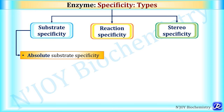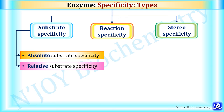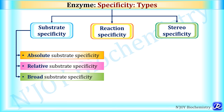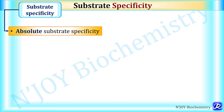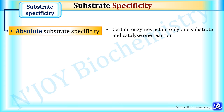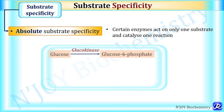Substrate specificity can be absolute, relative, or broad. In absolute substrate specificity, certain enzymes act on only one substrate and catalyze one reaction. For example, glucokinase phosphorylates glucose to glucose-6-phosphate in the glycolysis pathway and is highly specific for glucose only — it cannot act on fructose. Therefore glucokinase has absolute substrate specificity.